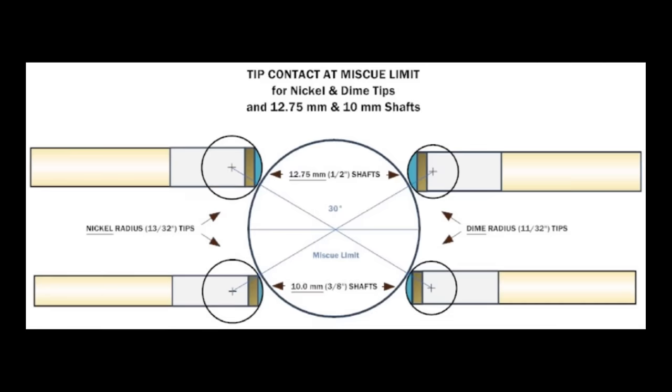This diagram compares two shaft sizes for both nickel and dime radius tips with hits at the miscue limit to impart maximum spin. The large diameter shafts are on the top and the rounder dime radius tips are on the right. Notice that the small diameter shaft results in contact closer to the edge of the tip. The nickel radius tip has the least room to spare. The tip needs to be rounder on a small diameter shaft to prevent tip edge contact over the full range of spins. However, even at a diameter of 10 millimeters, which is very small, the nickel shape is still round enough to prevent tip edge contact.